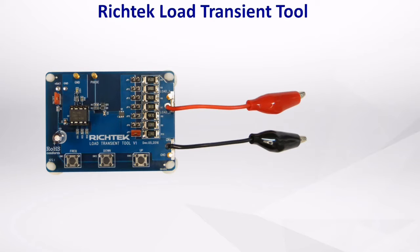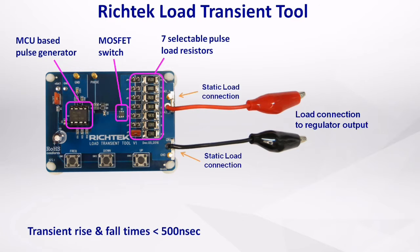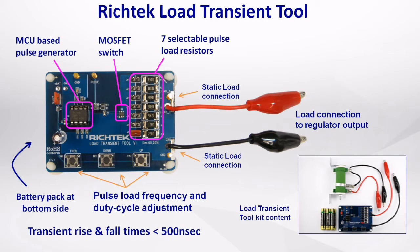The RichTech Load Transient Tool is specially designed to generate fast load steps for easy converter stability testing. It has an onboard microcontroller, a slew rate controlled MOSFET switch, seven selectable dynamic load resistors, and connection for a static load resistor. Load pulse duty cycle and frequency can be adjusted via push buttons, and a battery pack on the bottom side makes this tool fully isolated and portable. The Load Transient Toolkit includes batteries and an adjustable power resistor for setting the static load.